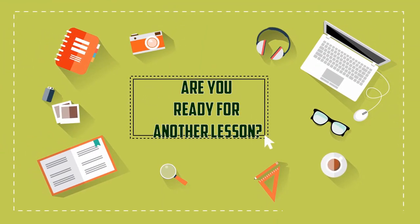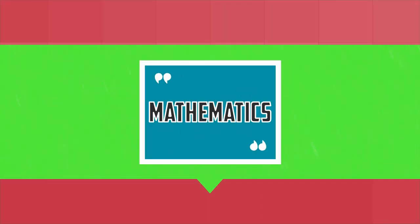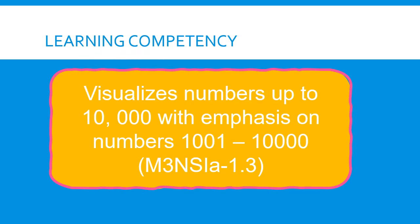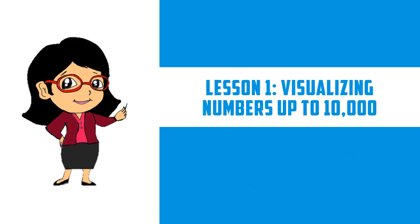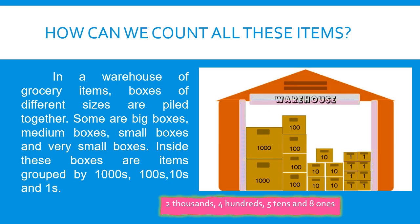This time, we will learn another lesson in mathematics. You will learn how to visualize numbers up to 10,000 with emphasis on numbers 1,001 to 10,000. Our first lesson in math is all about visualizing numbers up to 10,000. Counting many items or objects can be easier by grouping them into thousands, hundreds, tens, and ones. Different ways can be used to visualize and represent these numbers.